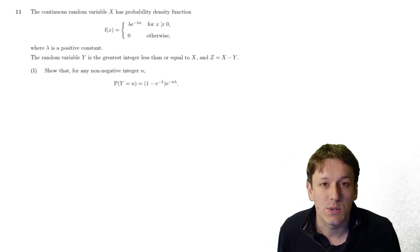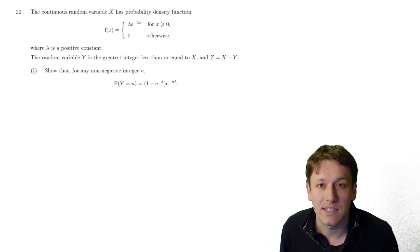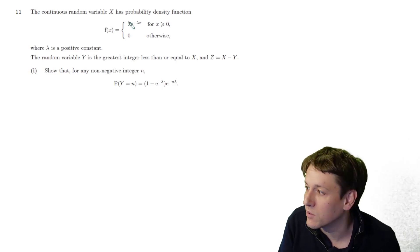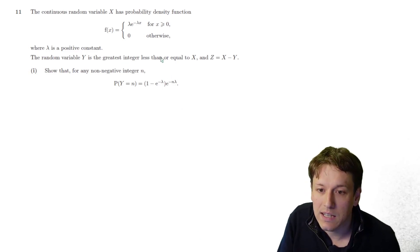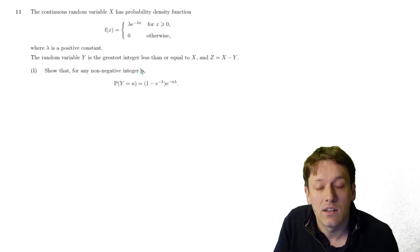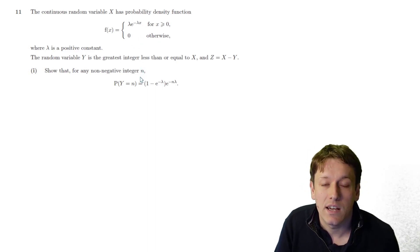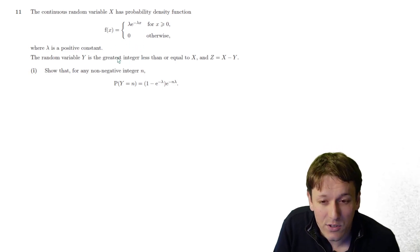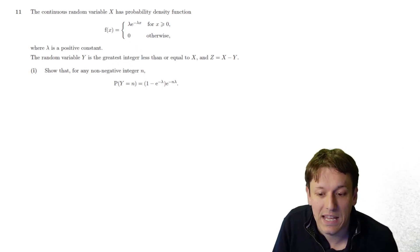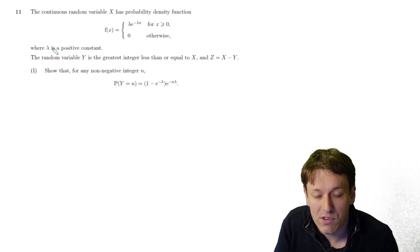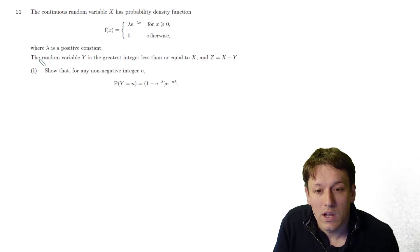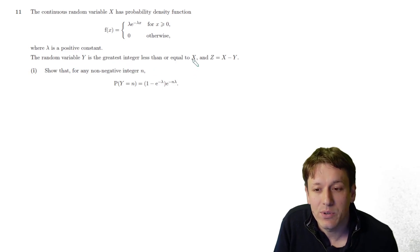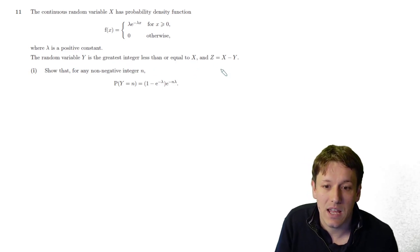In this problem we have the continuous random variable X with probability density function f(x) = λe^(−λx). You may or may not recognise that as an exponential distribution — certainly no need to know that for this question; we'll just be using A-level techniques. The random variable Y is the greatest integer less than or equal to X, and Z equals X minus Y.